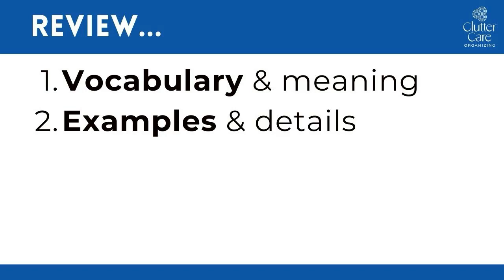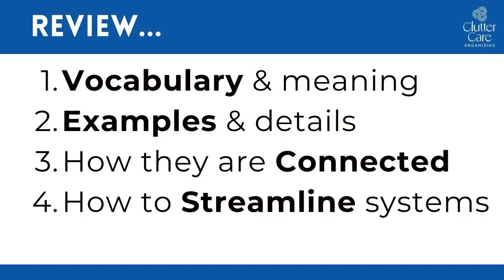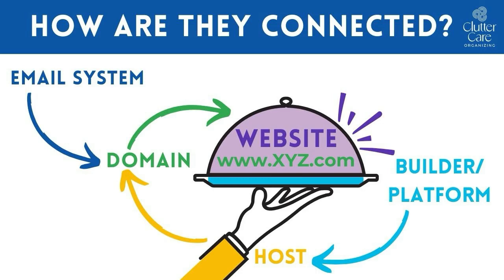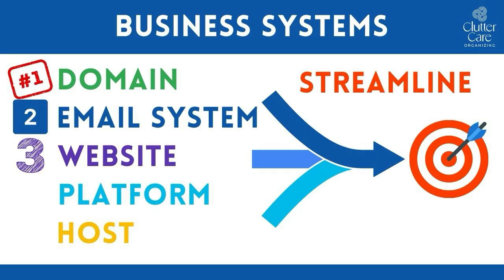To review, in this video I have gone over five vocabulary words and their meanings, examples and details about those technical words, how those five things are connected, how to streamline your systems, and in what order to create these things. Your domain name is xyz.com, which is your business identity. Your email is going to be yourname@xyz.com and should be associated with an appropriate business system that you want to use. Finally, you're going to create your website on a platform that you like, connected to your domain name, and publish it to the internet so people can find you at www.xyz.com. Please be sure to think about streamlining your business systems so that you have as few logins as possible, and please make sure to create these in the correct order: number one, domain; number two, email system; and number three, website.